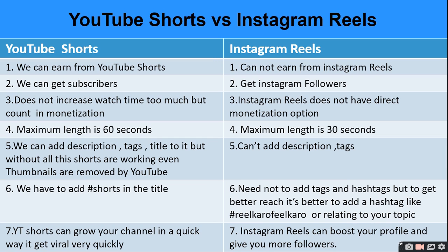The maximum length for YouTube Shorts is 60 seconds and Instagram Reels is 30 seconds. You can add a description, tags, and title to Shorts. For Instagram Reels, you can add hashtags like 'reel' or relating to your topic, using hashtags through which you can reach more people and get viral.